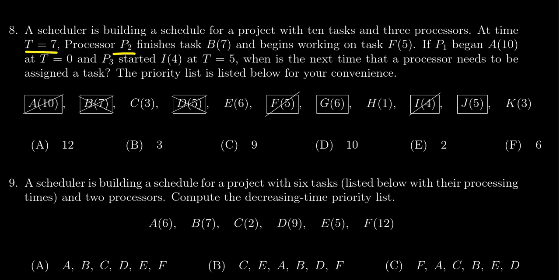Processor 2 finishes task B—you'll notice it's completed now—and begins working on task F. So processor 2 is currently working on task F. Processor 1 had started task A at time T=0, so currently at time 7 it's still working on it.